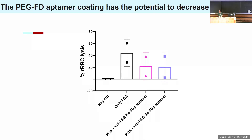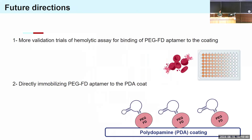Future directions include more validation trials for our final coating with the pegylated FD aptamer, and a further step could be trying to directly immobilize the factor D aptamer to the PDA coating without the use of antibodies. My poster number is 16. I'll be happy to answer any questions. Thank you.